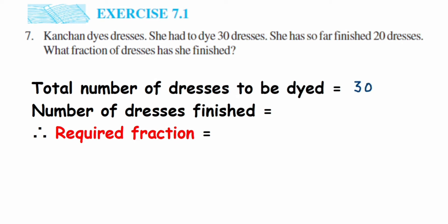She has to do 30 dresses. Out of 30 dresses, she has finished only 20. So number of dresses finished will be equal to 20. Now the required fraction will be nothing but out of 30 dresses—the total will be 30—out of 30 she has done only 20, so it will be 20 upon 30.